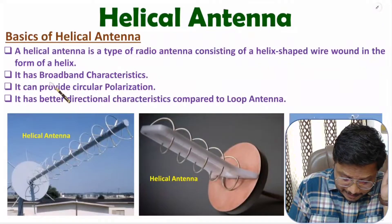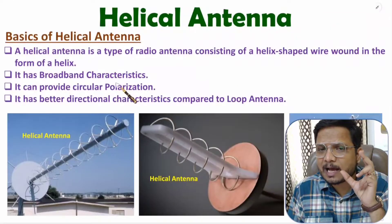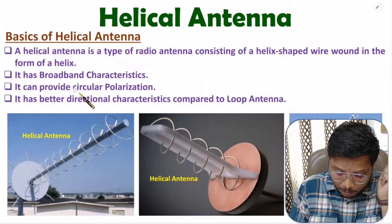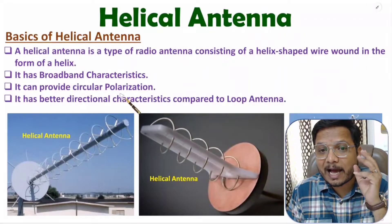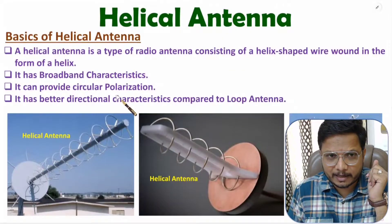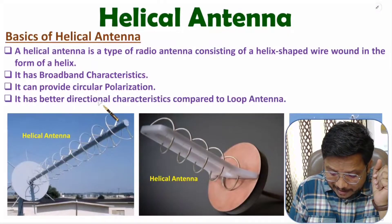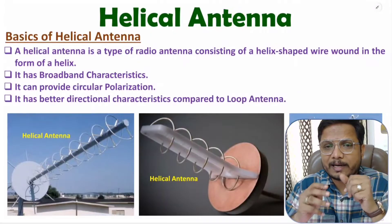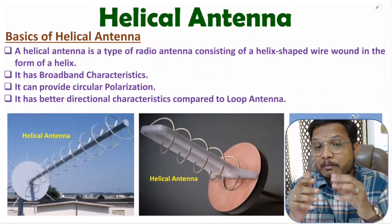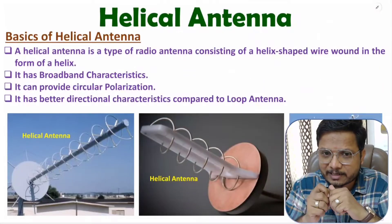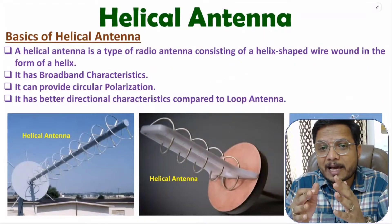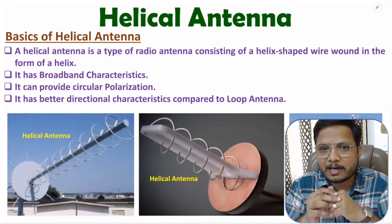Helical antenna has two special characteristics. First, it has broadband characteristics — its bandwidth is higher compared to some other antennas like circular antenna. Second, it can provide circular polarization. Because of these higher broadband characteristics and circular polarization, there are many applications. It also has better directional radiation characteristics compared to loop antenna.